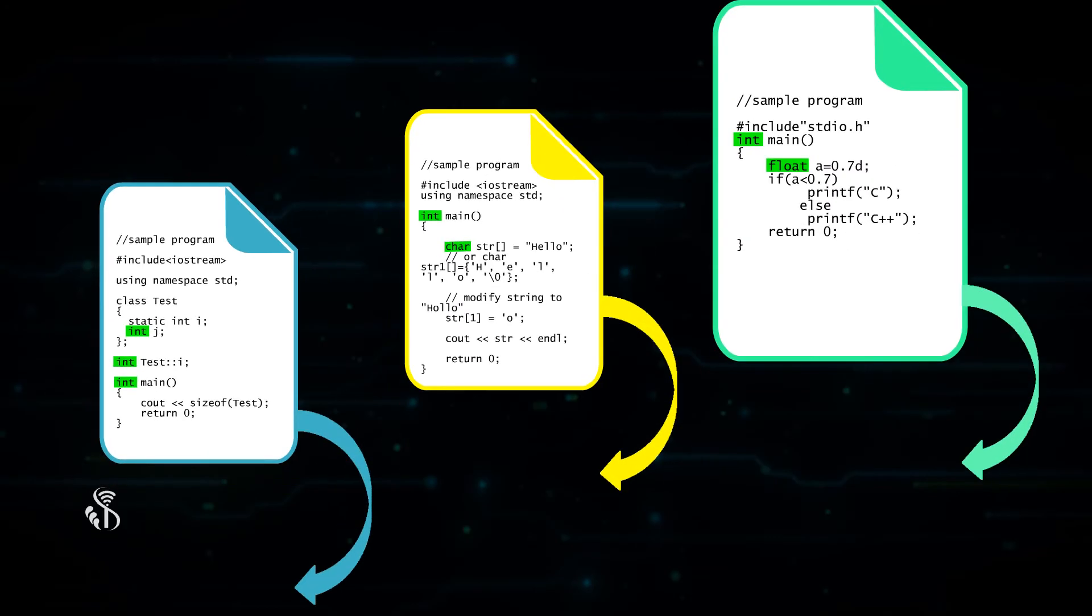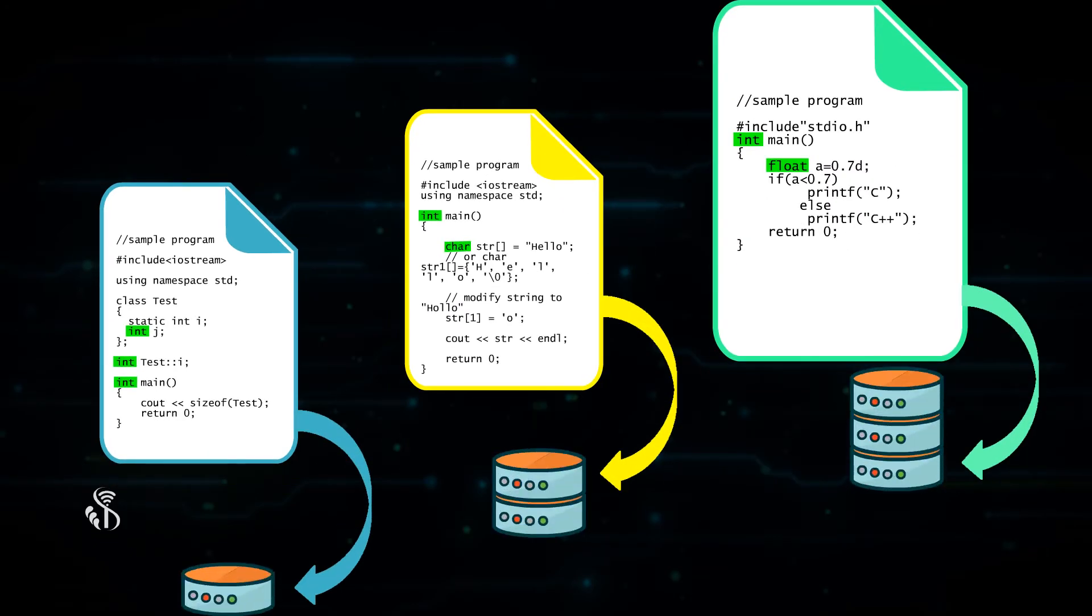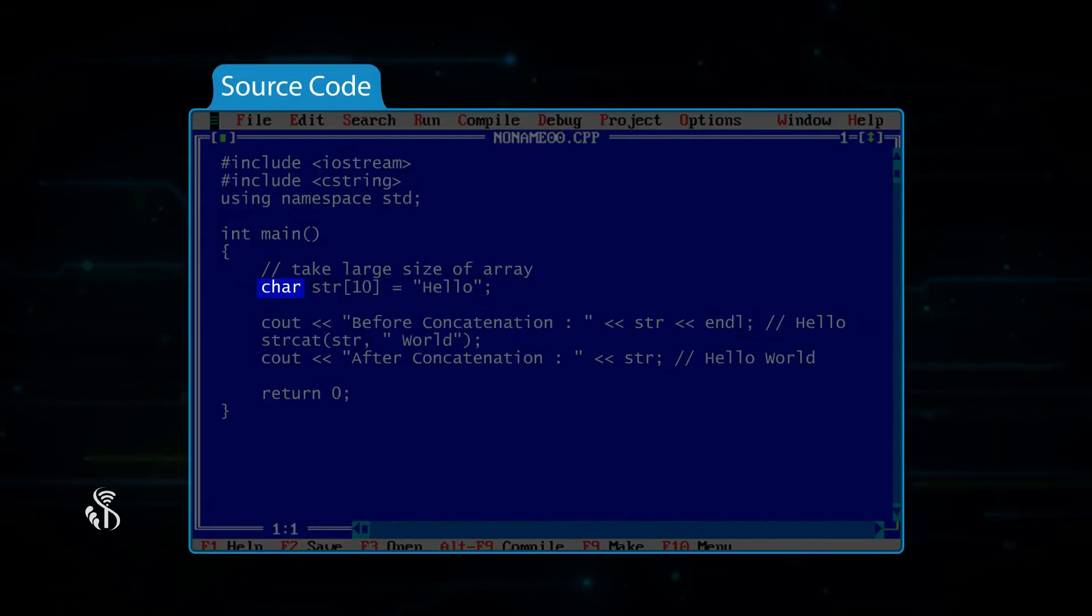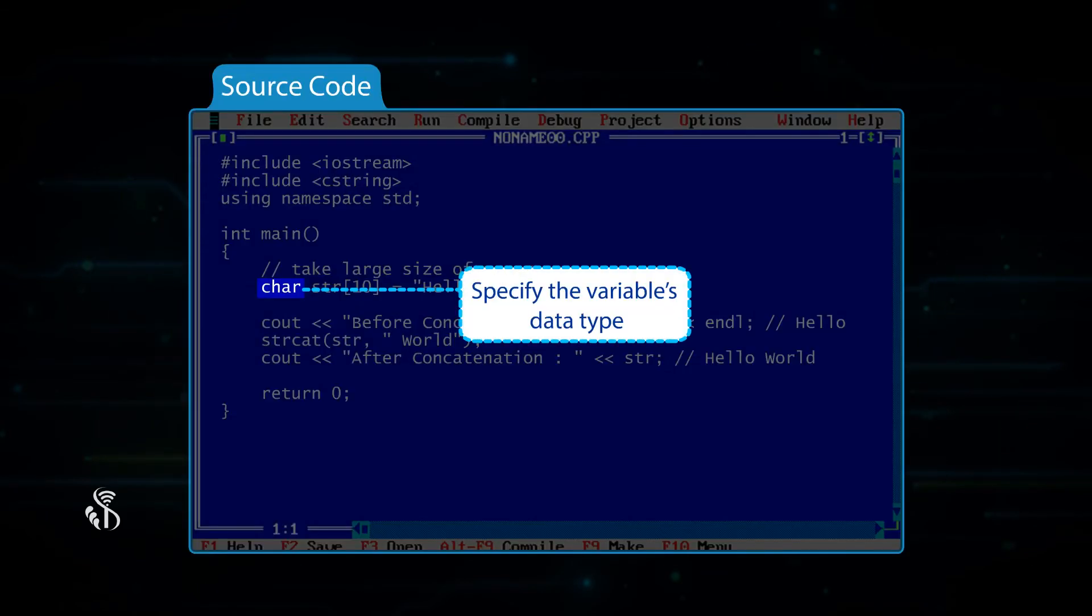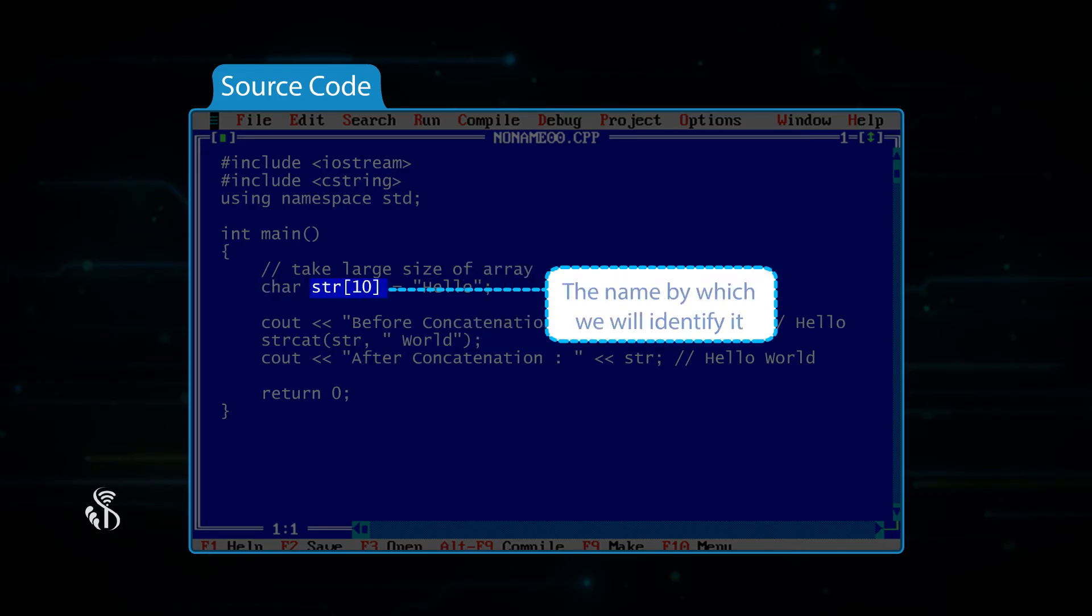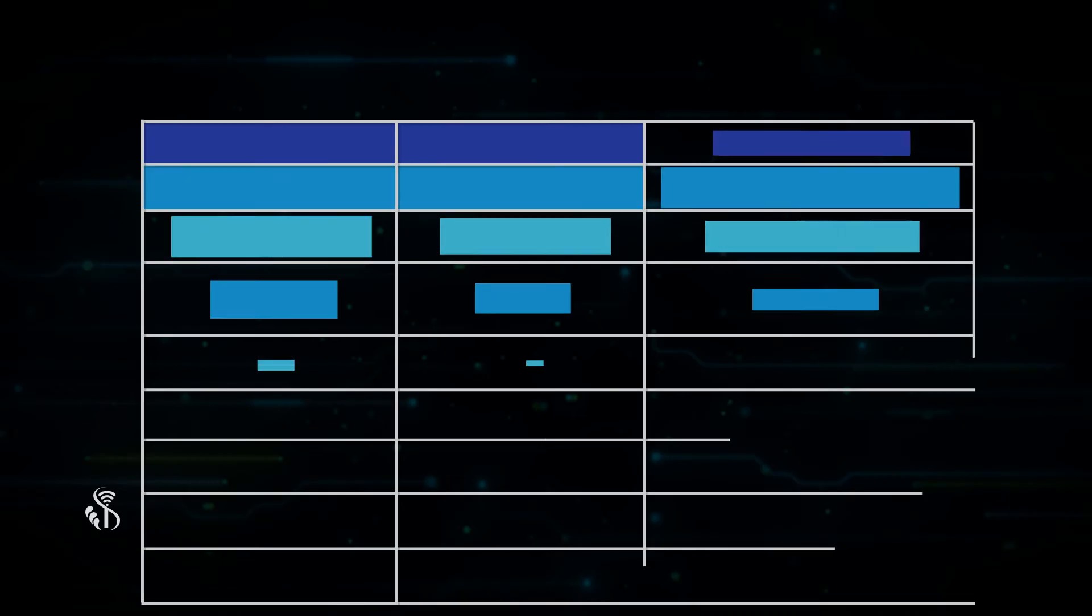Based on the data type, different amount of space is allotted on the hard drive for the variable. When we define a variable, we have to specify the variable's data type and the name by which we will identify it.